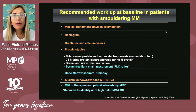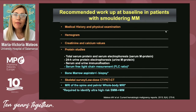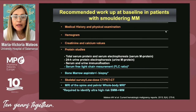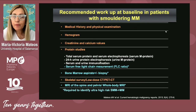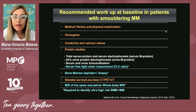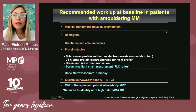The workup for smoldering myeloma is more complex, requiring medical history, hemogram, biochemistry, and protein studies. Some mandatory assessments include serum free light chain measurement, bone marrow aspirate plus or minus biopsy, and MRI of the spine and pelvis — or ideally whole-body MRI — together with low-dose CT or PET-CT to evaluate the possibility of bone disease.